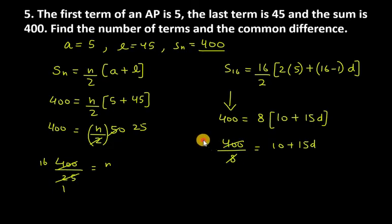Moving 10 to the left side, 50 minus 10 equals 15d, so 40 equals 15d.